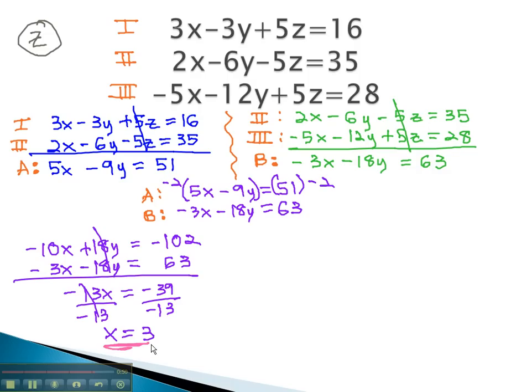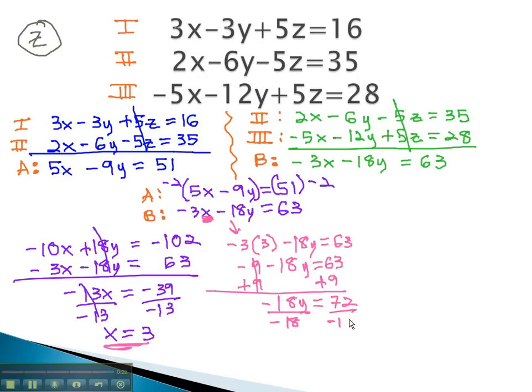We can now plug this value of 3 in for x in one of the equations. Let's plug it into B. Negative 3 times x, or 3, minus 18y equals 63. Negative 9 minus 18y equals 63. Add 9 to both sides, and we get negative 18y equals 72. Dividing both sides by negative 18, and we find out that y is equal to negative 4.